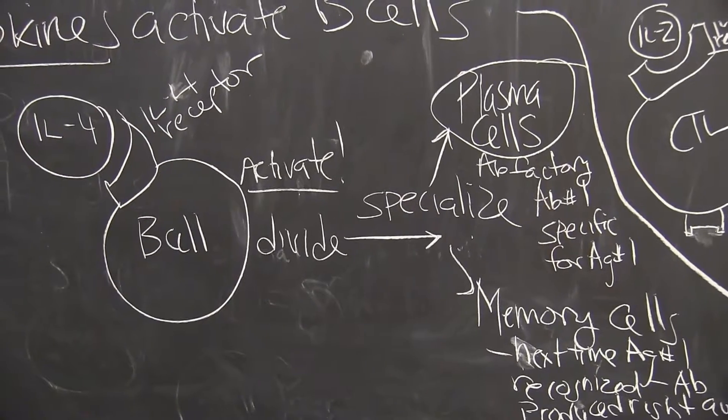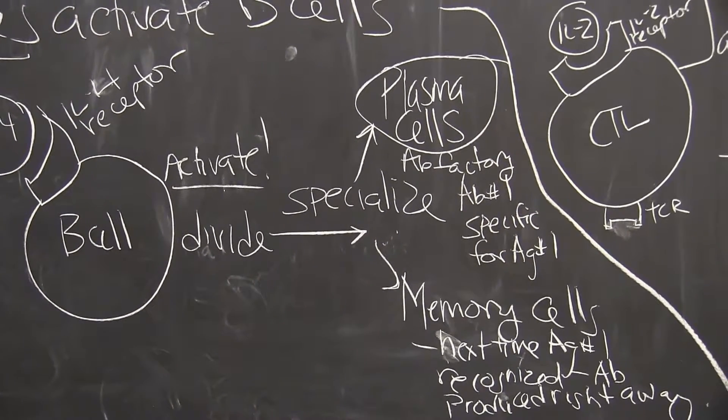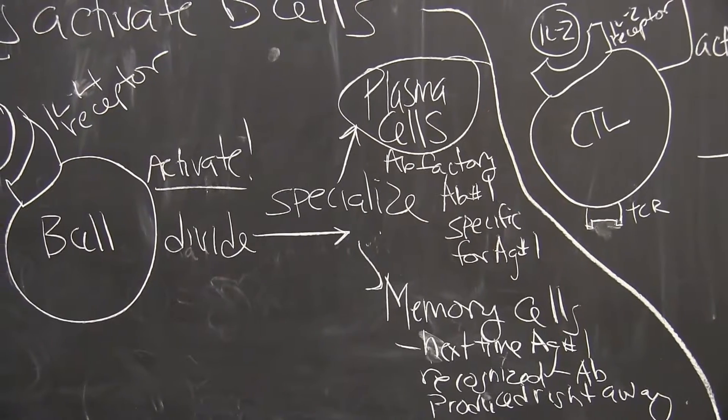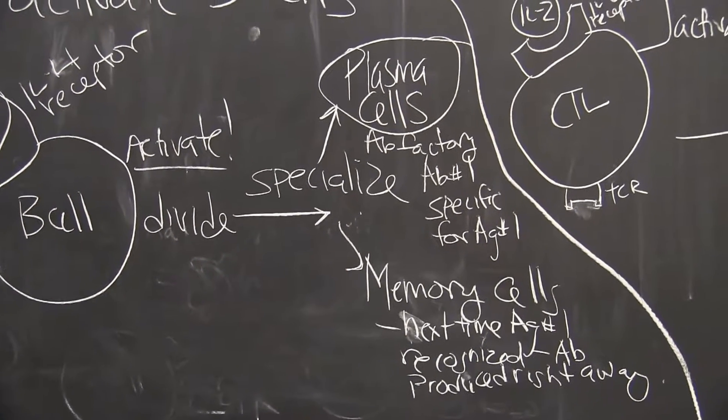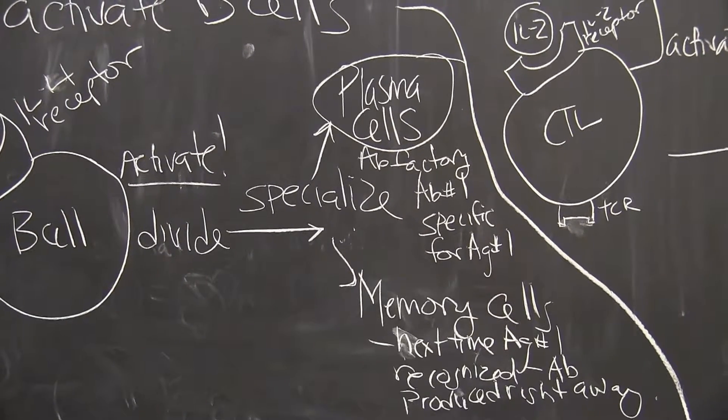A few things will happen. The B cell will divide and it will also specialize into plasma cells, for example. These are our antibody factories.